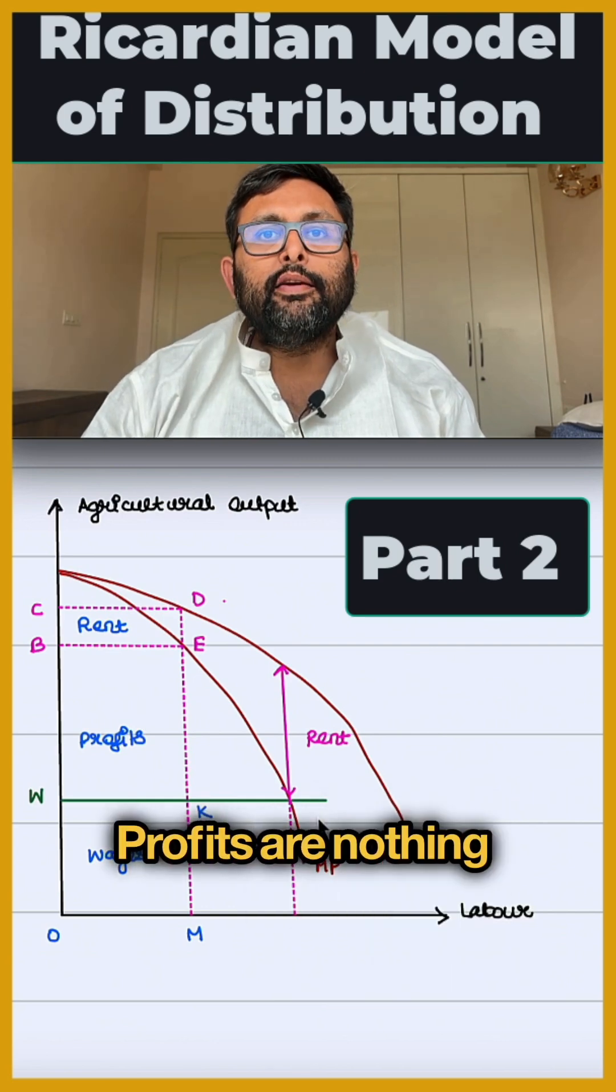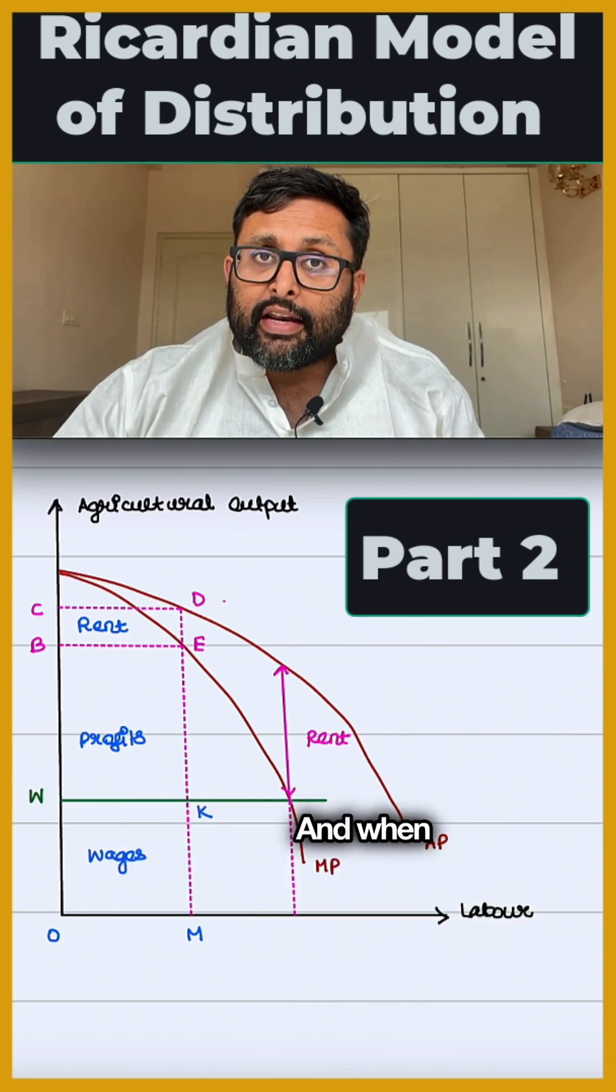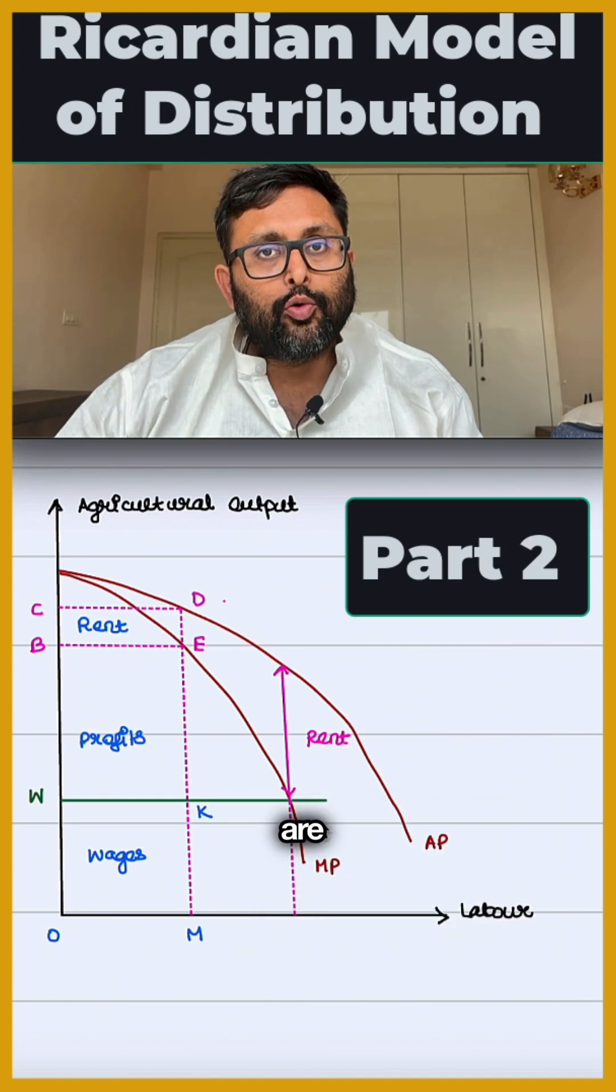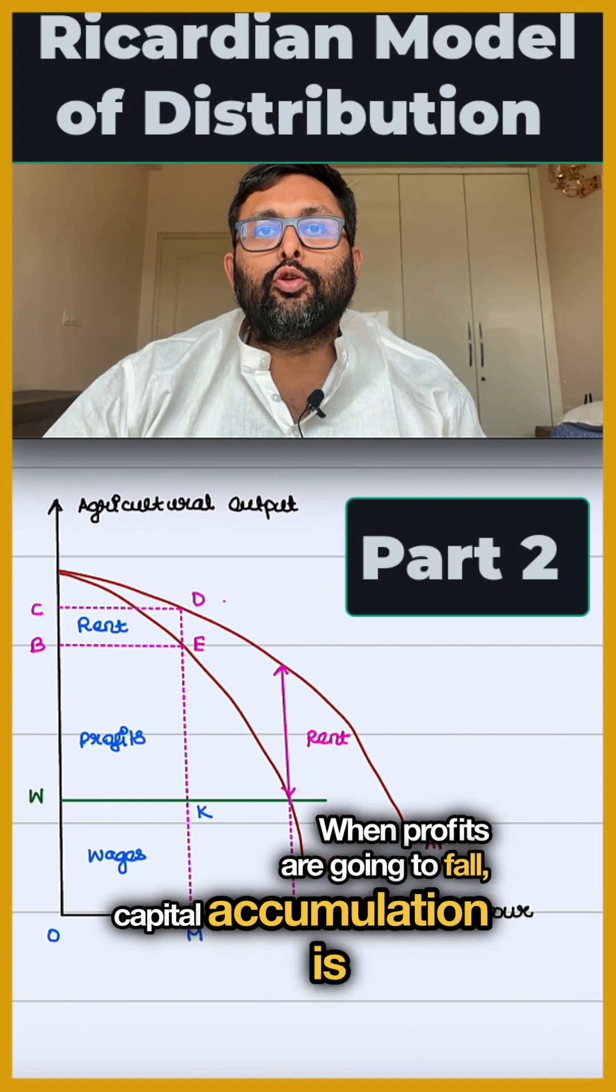Profits equal total output minus rent and wages. When rent and wages are increasing, total profits are going to fall. When profits fall, capital accumulation also falls.